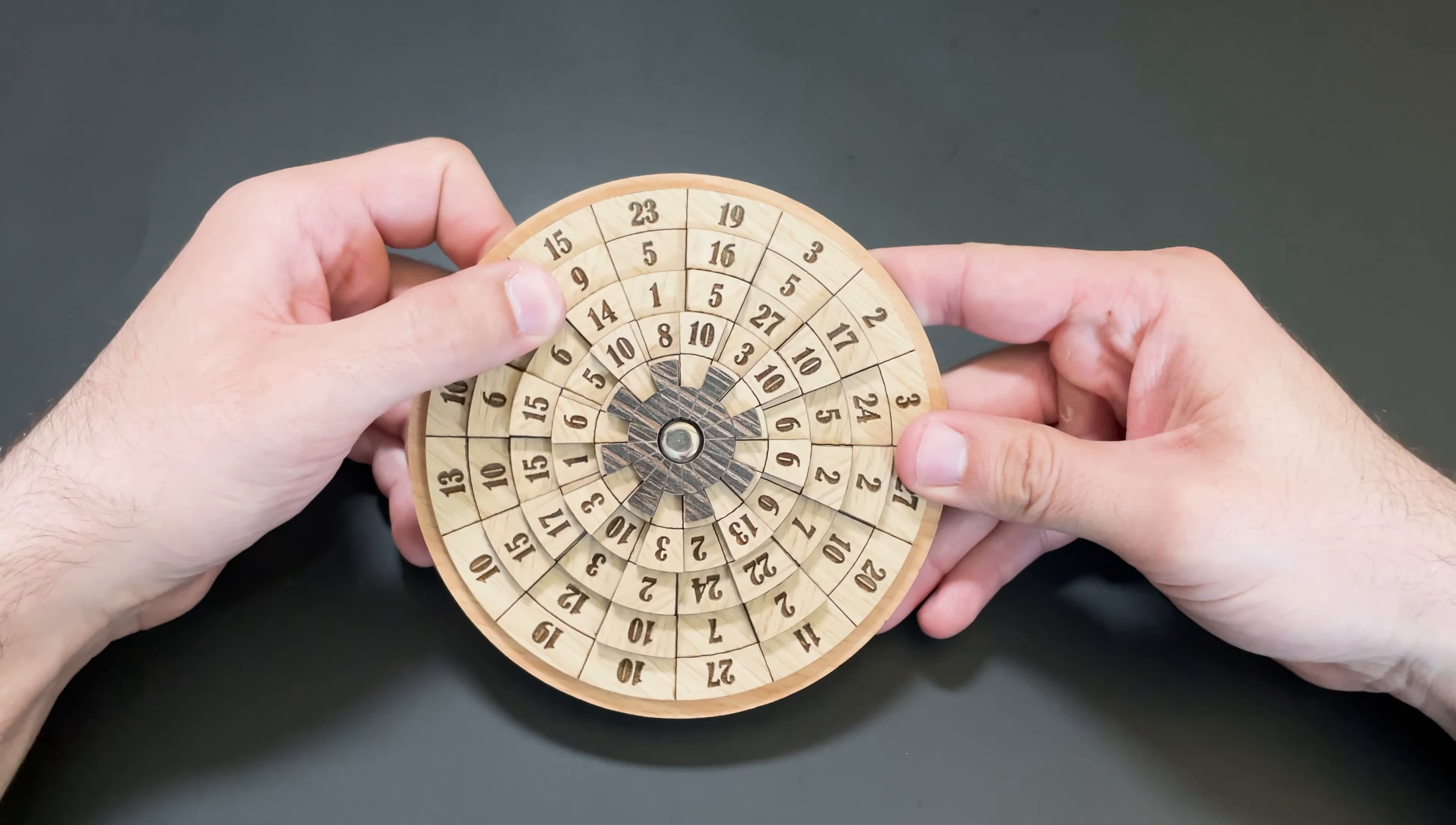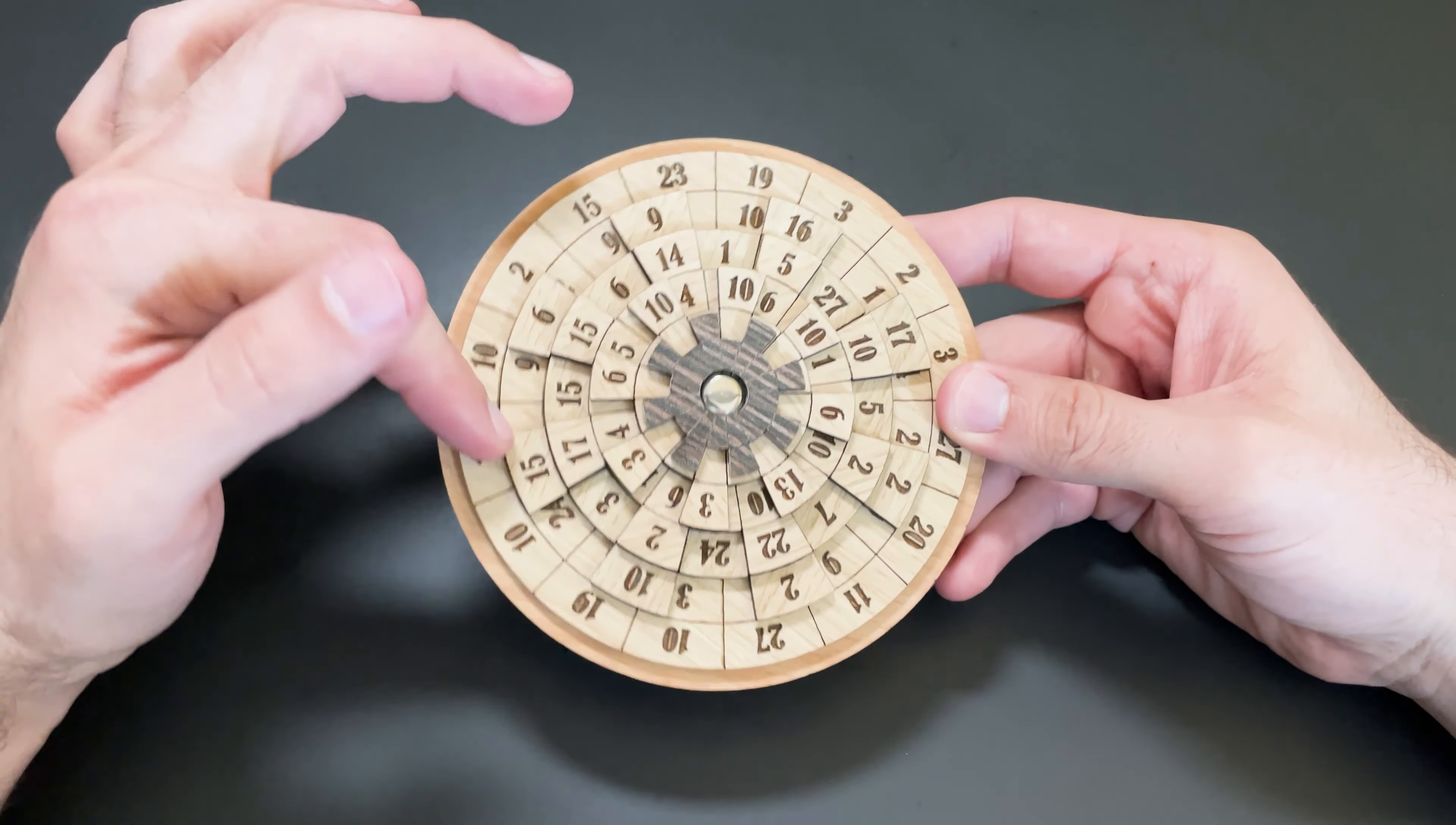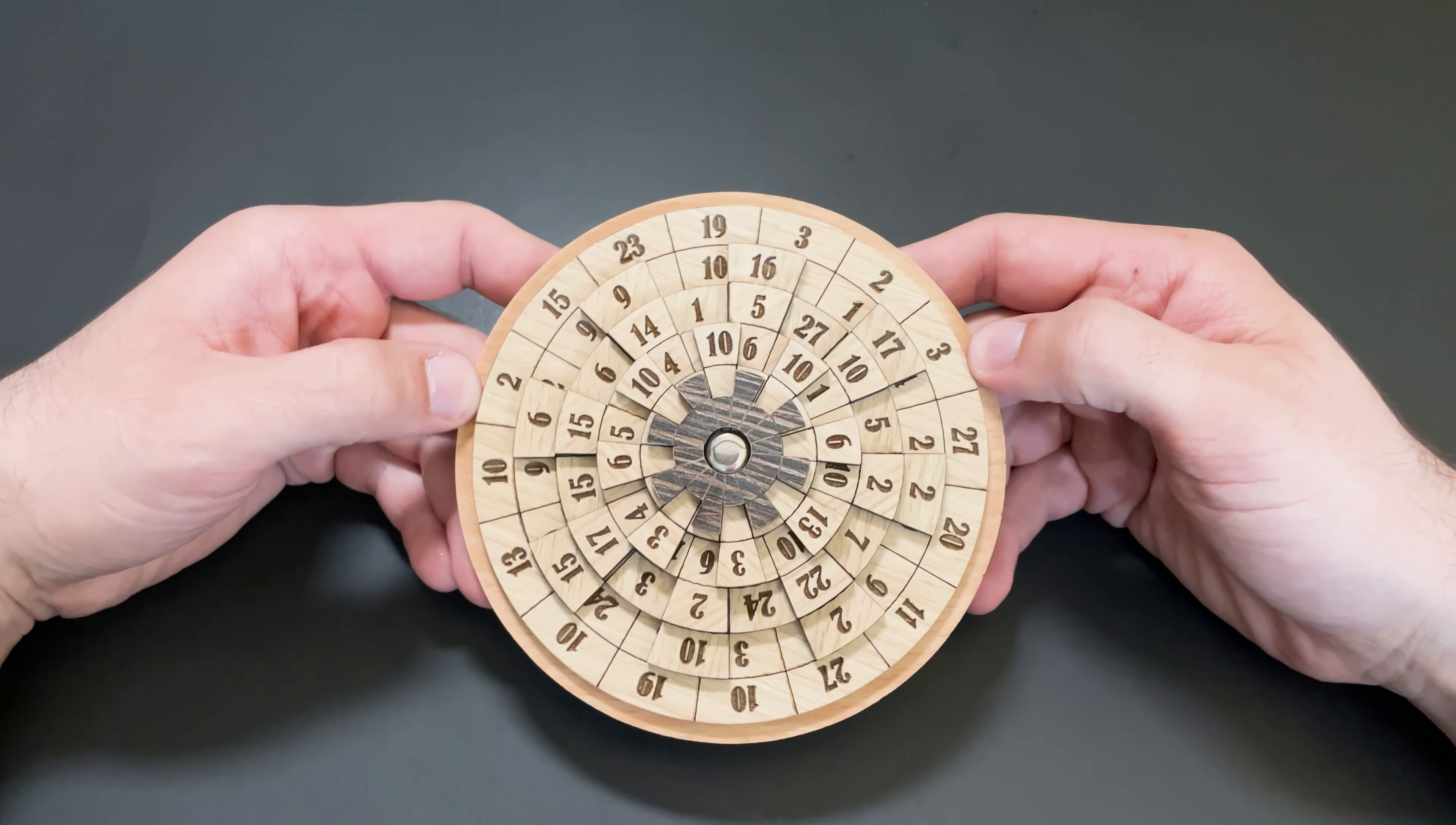And also, if you want to give it to someone and you really want to stump them, try and tell them that all the lines, the numbers should be aligned and have the same sum, but don't tell them the number. So then it makes it extra, extra difficult.